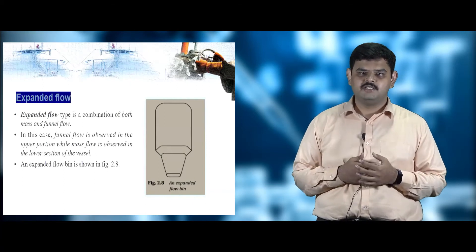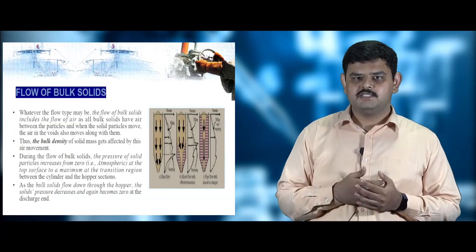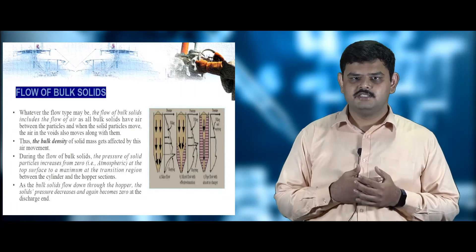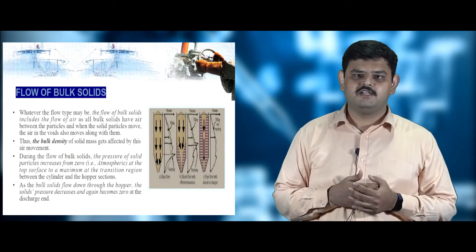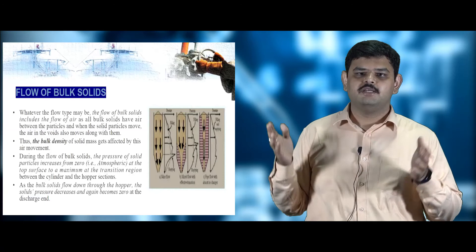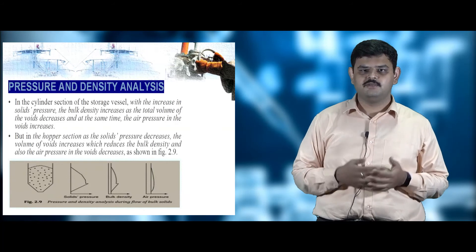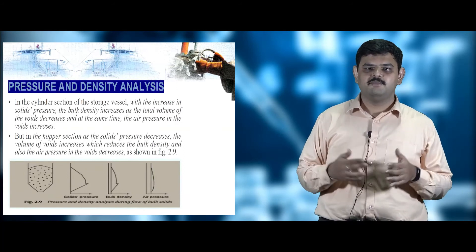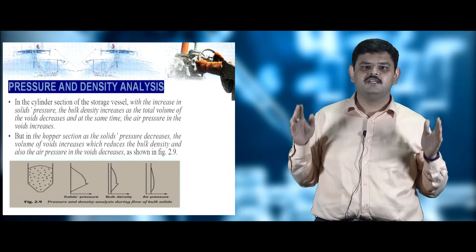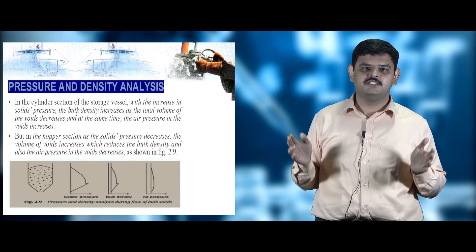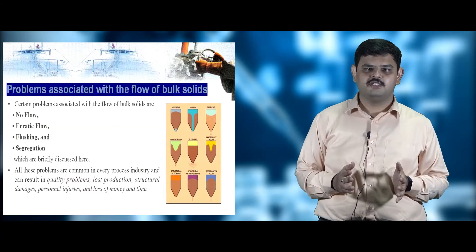Expanded flow is a combination of both funnel flow and mass flow — funnel flow in the upper section and mass flow in the lower section. Pressure influences bulk density inside the container. Pressure is initially zero at the top, increases in the transition zone between the cylinder and hopper, then reduces to zero, establishing maximum solid flow. Similarly, bulk density and solid pressure are zero at the top, reach a maximum at the transition zone, and then reduce to zero again.